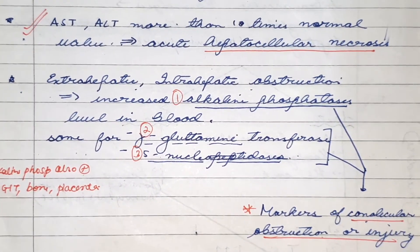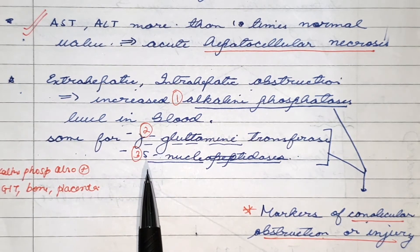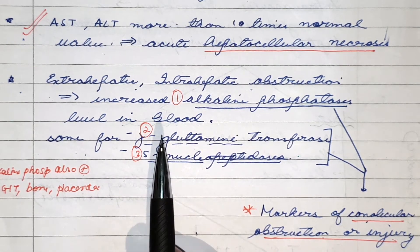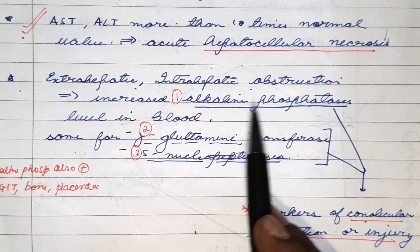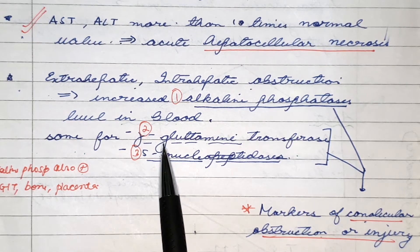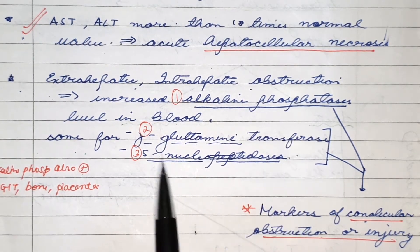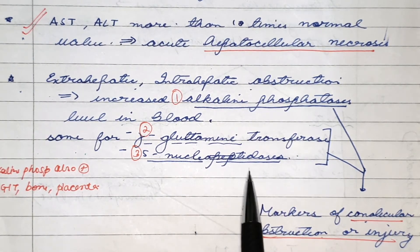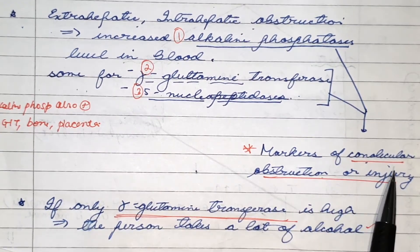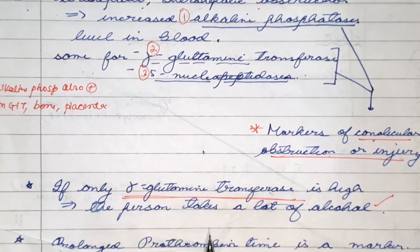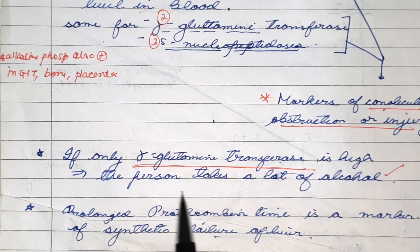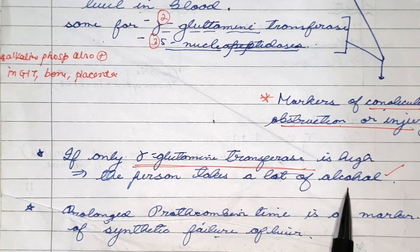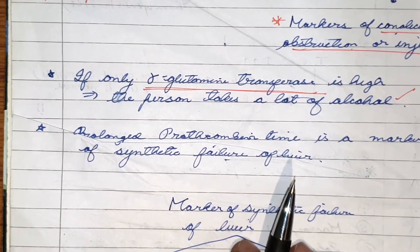Now let's talk about important enzymes for extrahepatic or intrahepatic obstruction. The enzymes released when there is damage to canaliculi or the extrahepatic biliary apparatus are alkaline phosphatase, gamma-glutamyl transferase, and 5-nucleotidase. These are markers for canalicular obstruction or injury. If only gamma-glutamyl transferase is high, that is a clinical indicator that the person consumes a lot of alcohol.